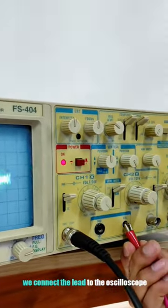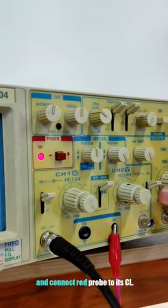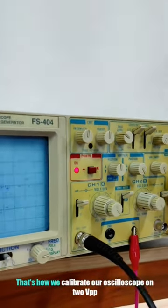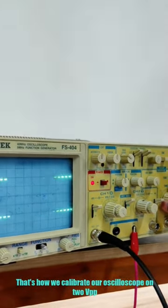To calibrate we connect the lead to the oscilloscope and connect red probe to its CL. That's how we calibrate our oscilloscope on two VPP and one VPP.